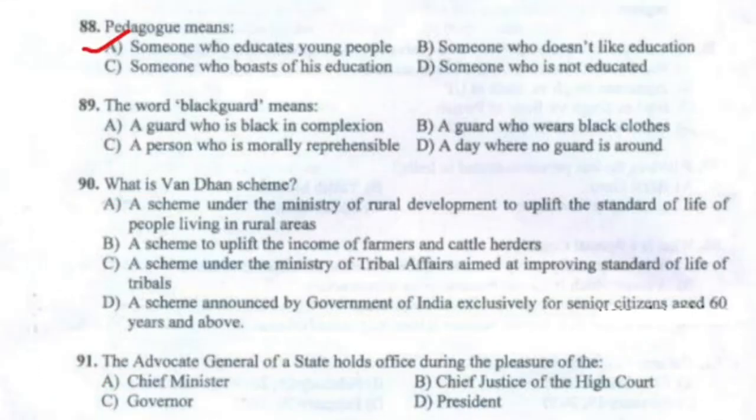Question 89: The word 'Blackguard' means Option C — a person who is morally reprehensible.